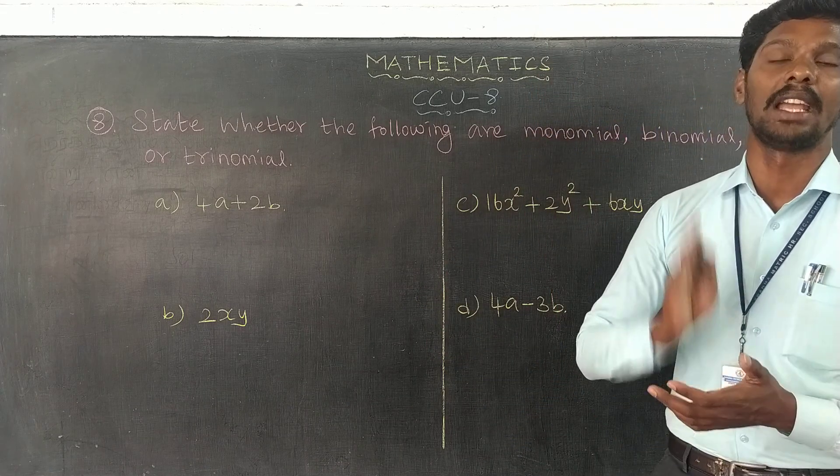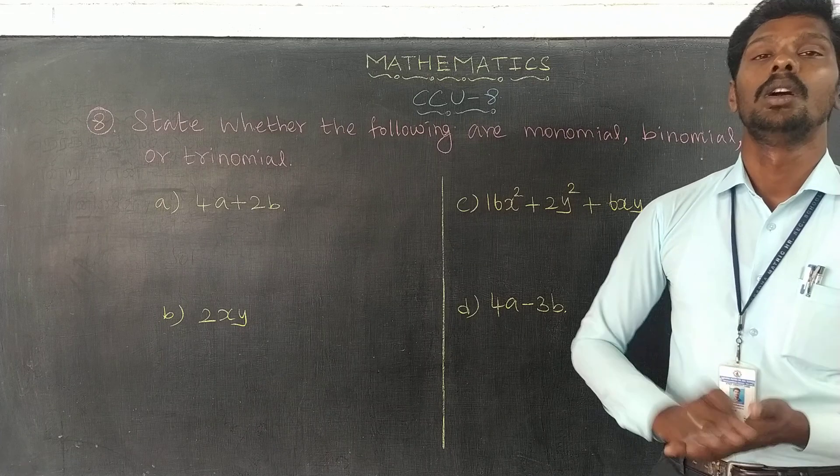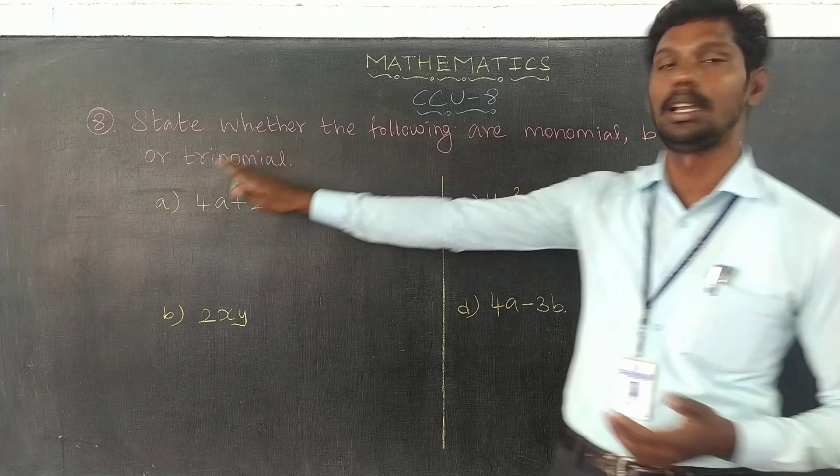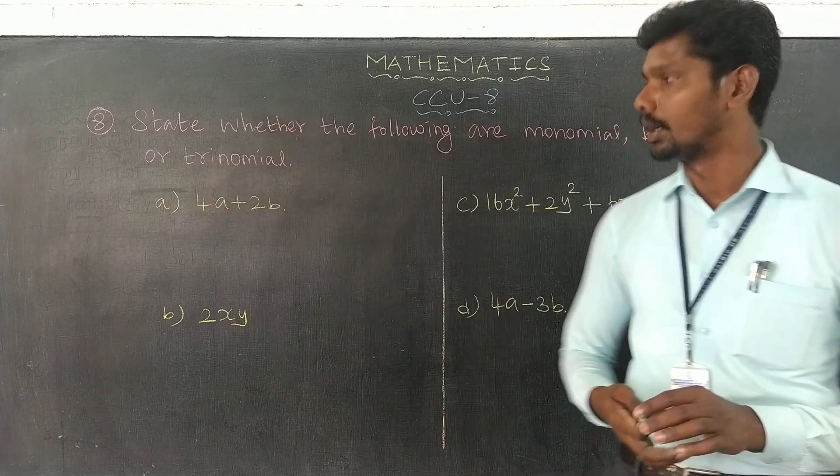Binomial: an algebraic expression consisting of two terms is called binomial. And when three terms, then trinomial.